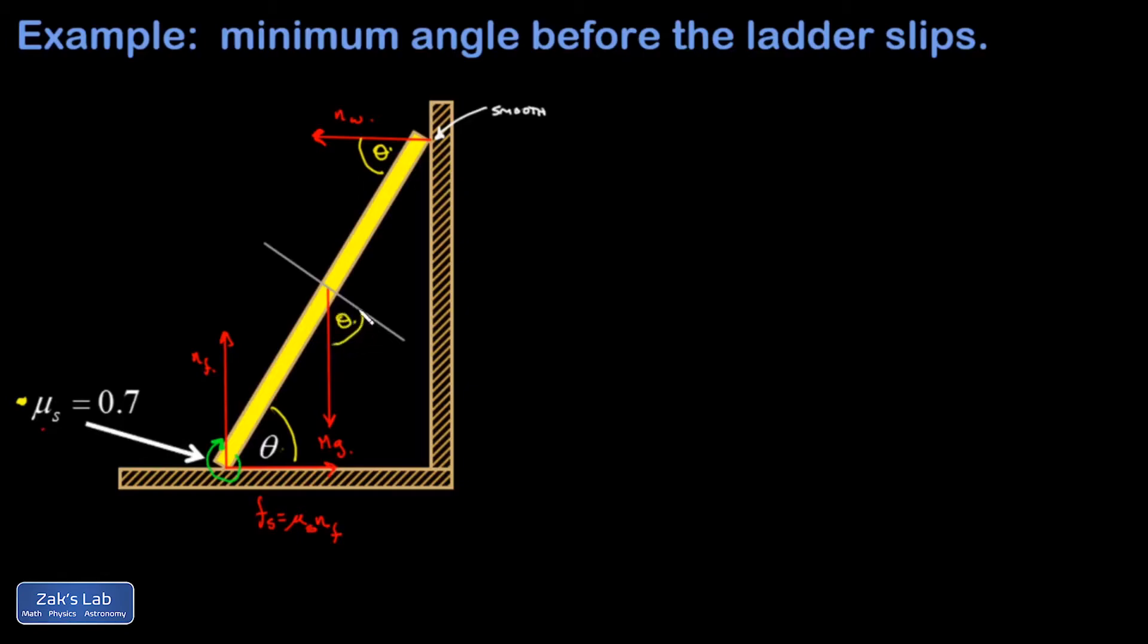And so if I want the perpendicular component of mg, well that's going to be an mg cosine of that angle theta. As for the normal force exerted by the wall, I can see that the perpendicular component would be given by the sine function, so the normal force times the sine of theta.